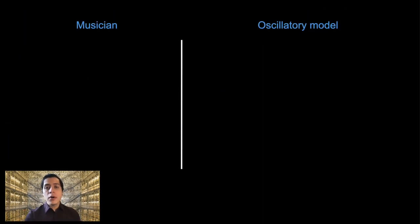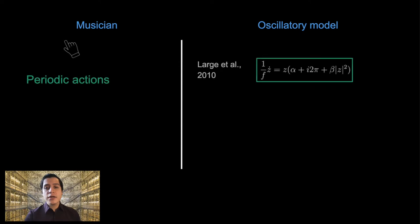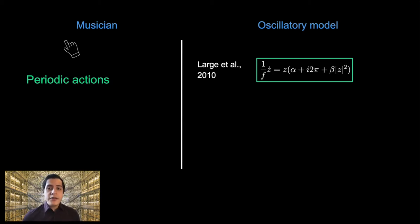For example, the larger the difference between two synchronizing musicians' spontaneous motor tempo, the harder it is for them to synchronize. Our model uses the canonical oscillator described by Professor LARGE, where the oscillator has a natural frequency behaving similarly to an individual's spontaneous motor tempo.